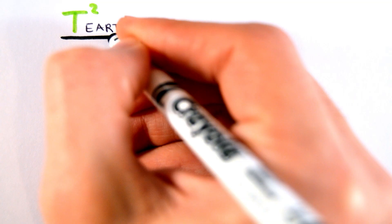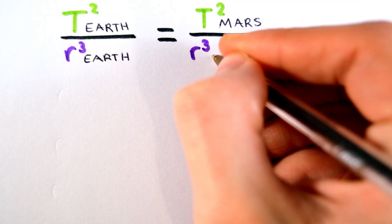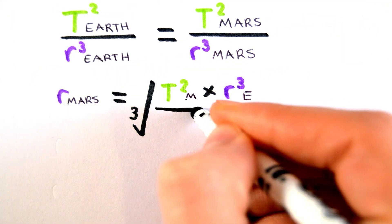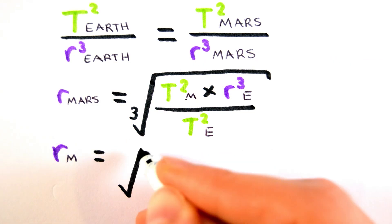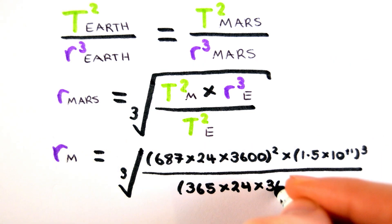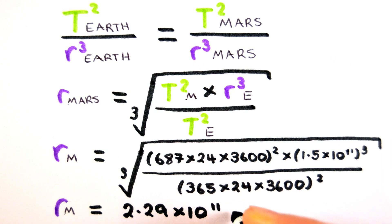Given that the orbital period of Mars is 687 Earth days, we can use the Earth's orbital characteristics to work out how far Mars is from the sun, as being 2.29 times 10 to the 11 meters.